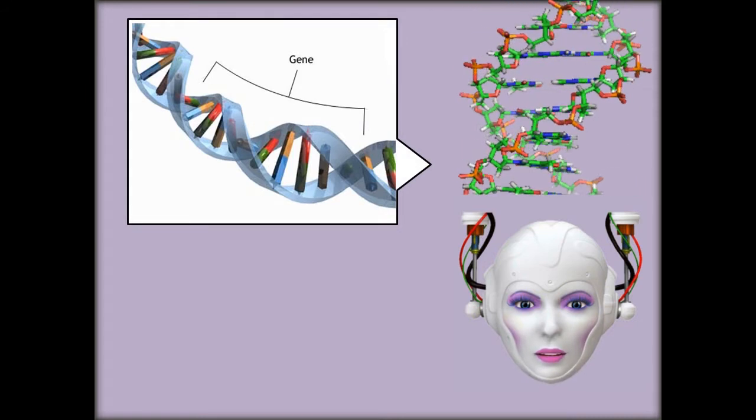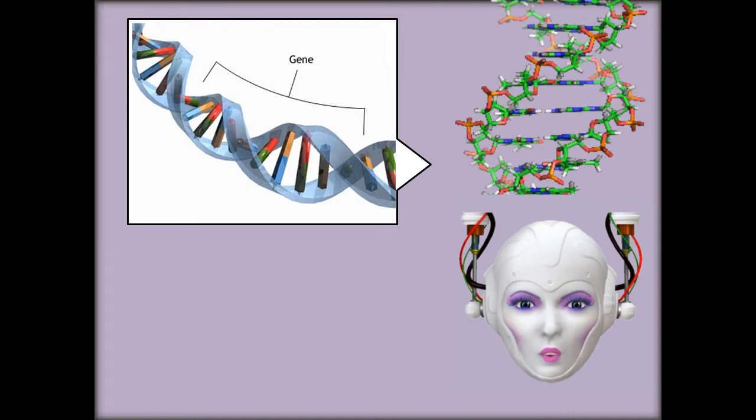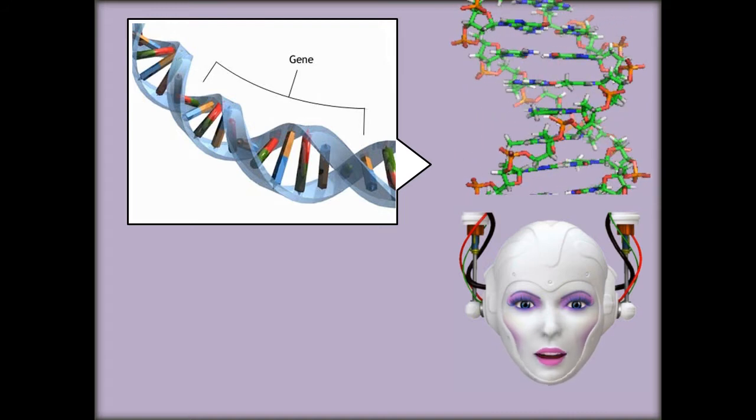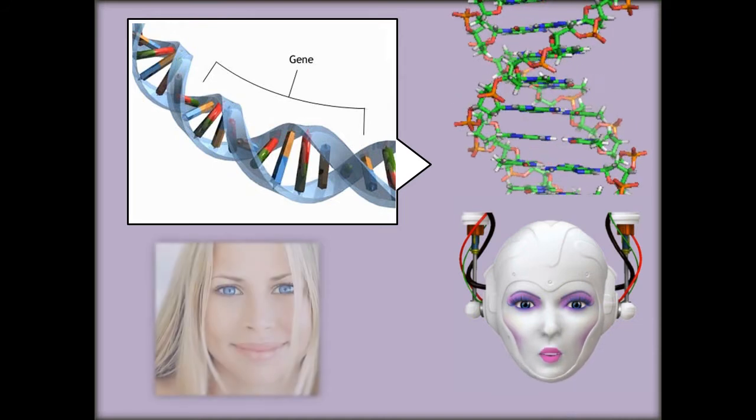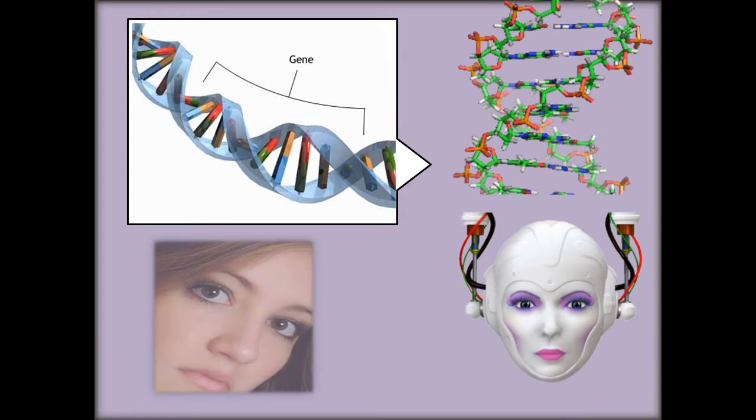Each gene represents a specific trait of the organism, like eye or hair color, and has several different settings. For example, the settings for color of eyes could be blue, green, or brown.